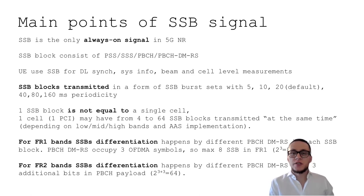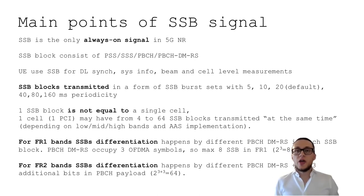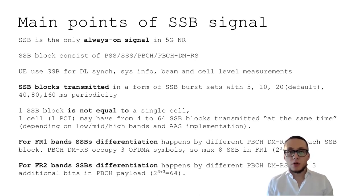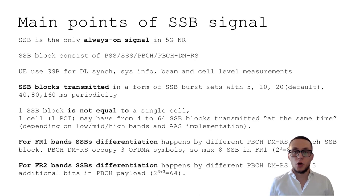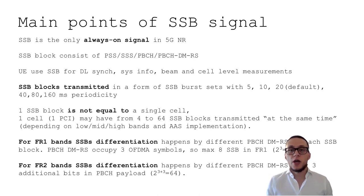One cell or one PCI may have from 4 to 64 different SSB blocks transmitted at the same time. It depends on frequency range and on how exactly your advanced antenna system works and its beamforming capabilities. For FR1 bands, user equipment can receive demodulation reference signals that occupy three OFDM symbols, which allows coding up to eight different SSB blocks. For FR2 millimeter wave bands, in addition to that method, the UE can receive an additional PBCH payload with three bits of information, enabling differentiation of up to 64 SSB beams.